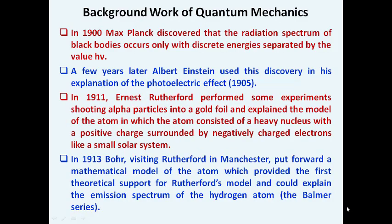Before going to the topic, you should know the background of quantum mechanics and how it came about. By 1900, Max Planck discovered the concept of the radiation spectrum of black bodies, which occurs only with discrete energies separated by the value of h-nu.